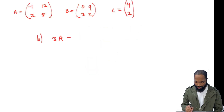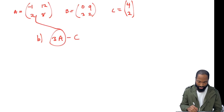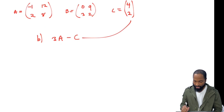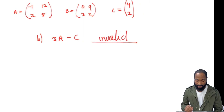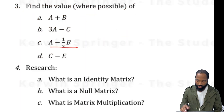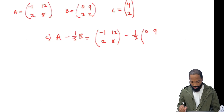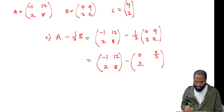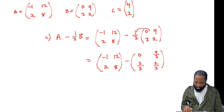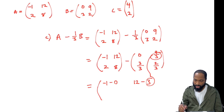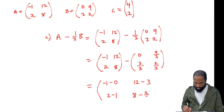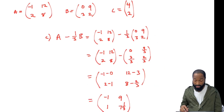Part B wanted us to get 3A minus C. But immediately I see there's a problem — when you multiply 3 by A that's okay, everybody gets multiplied by 3, but C is not the same size, so this invalid operation can't work. For A minus one-third B: we send the third into B, so one-third of 0 is 0 and one-third of 9 is 3. Then we subtract: negative 1 minus 0, 12 minus 3, 2 minus 1, and 8 minus two-thirds. You should end up with that final answer. Let me know if you got it.